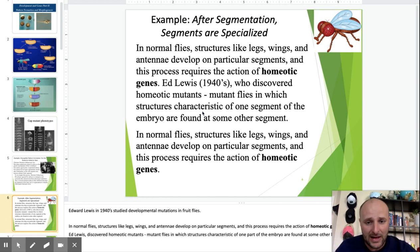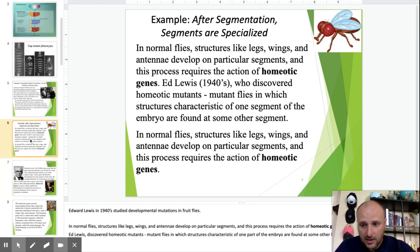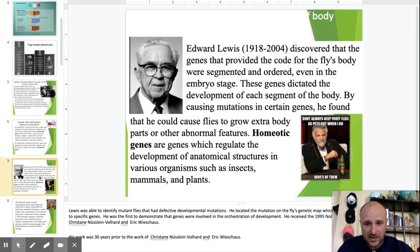And normal flies, structures like legs, wings, antennae, develop on particular segments because of the homeotic genes or the Hox genes. If you mess with this, you're going to get some weird-looking stuff, and we'll show you that.